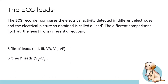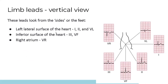ECG leads compare electrical activity between different nodes, looking at the heart from different directions. The heart is a 3D structure — you can look at it from a vertical view (like a coronal/frontal plane) or horizontally (like a transverse view). Together these give a good 3D image of what's happening. You have six limb leads and six chest leads — the chest leads are labeled V1–V6; everything else is a limb lead.